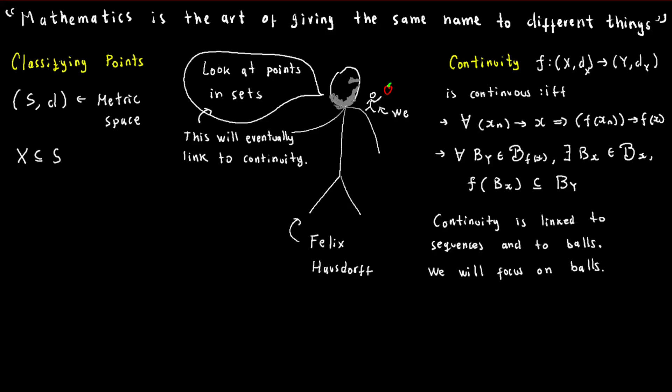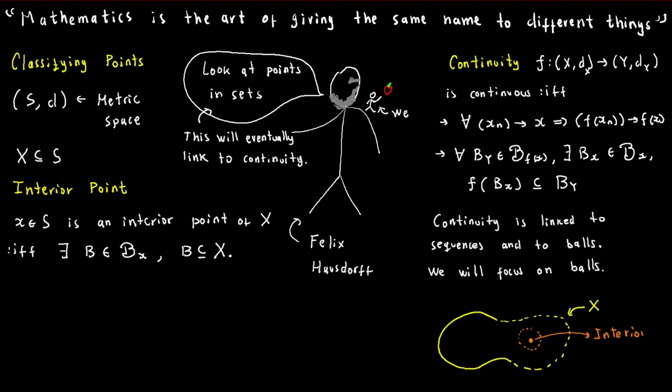Consider X a subset of a metric space S. We say that a point x is an interior point of X if there exists an open ball centered at x that is entirely contained within X. In other words, x has enough wiggle room between itself and the boundary of X. It's worth noting that x must also be an element of X for this definition to hold.